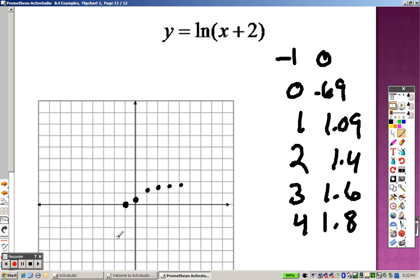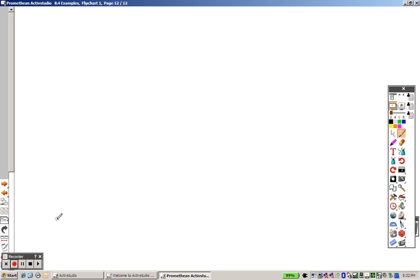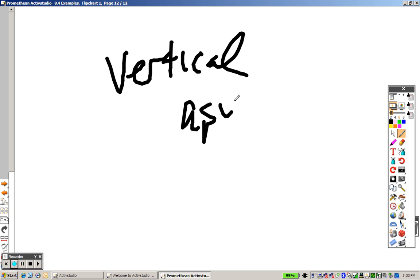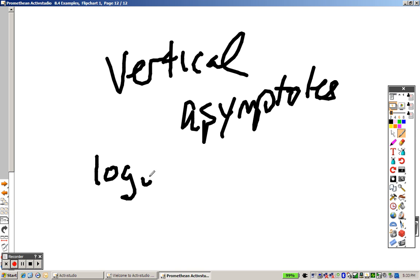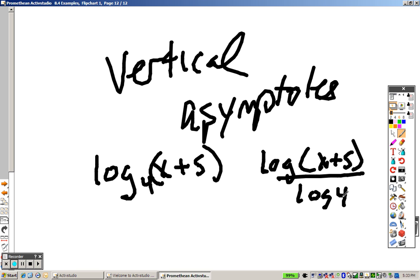So the point is, it goes to negative 2 and it kind of keeps curling up there. And there's your graph of that. So there's graphs of logs, and there's some graphs of natural logs. And just remember, now there's vertical asymptotes when we're talking about logs. And remember, when you rewrite something like this to graph it, if you wanted to graph that on your calculator, you'd have to write log of x plus 5 over log of 4. So keep that in mind.